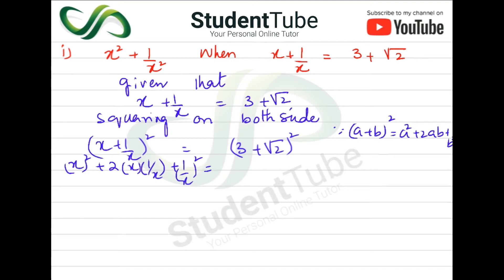Two terms are given here. We apply the same formula (a + b)² where A is 3 and B is under root 2. So we get: 3 squared plus 2 times 3 times under root 2 plus (under root 2) squared.